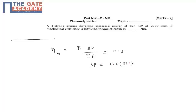So this is your brake power, and this brake power is nothing but torque into omega, which is nothing but torque into omega 0.8 into 327 kW. So I need to find out the torque at the crank.